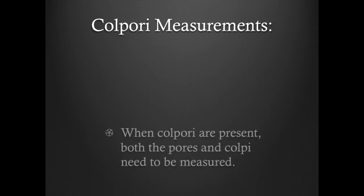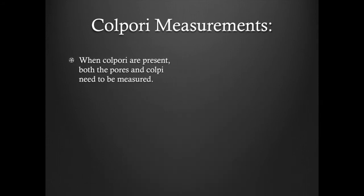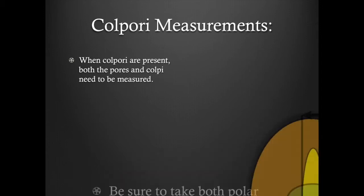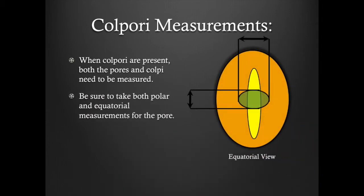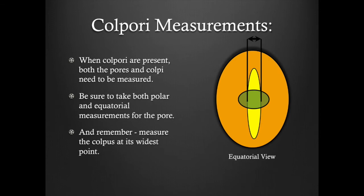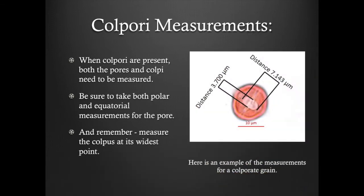Colporate measurements. When colporate apertures are present, both the pores and the colpi will need to be measured. The same methods of measuring apply. Be sure to take both polar and equatorial measurements of the pore. Also, be sure to measure the colpis at its widest point. Here is an example.